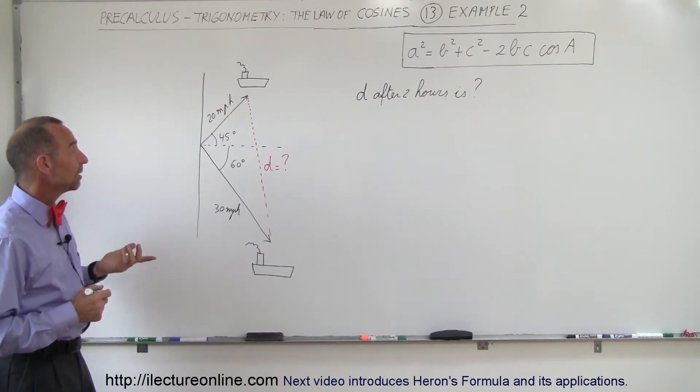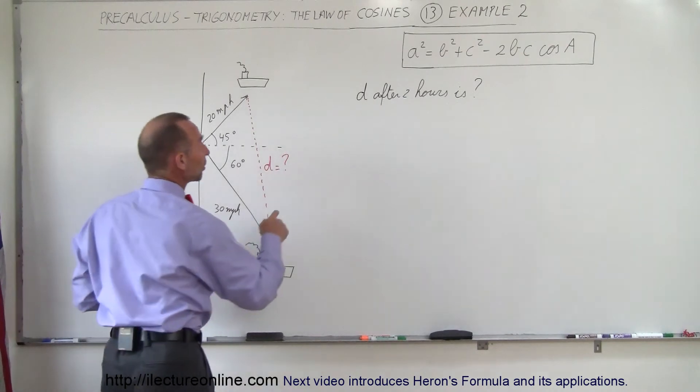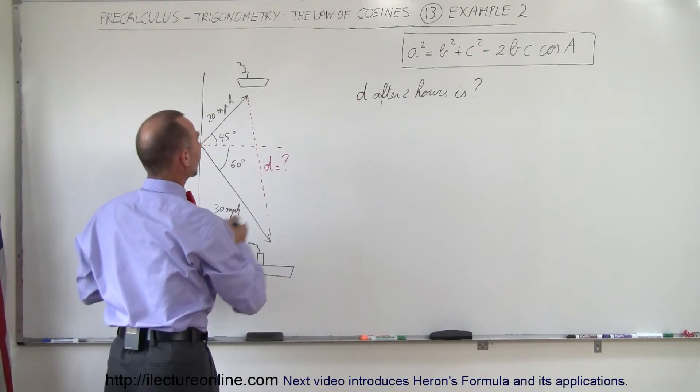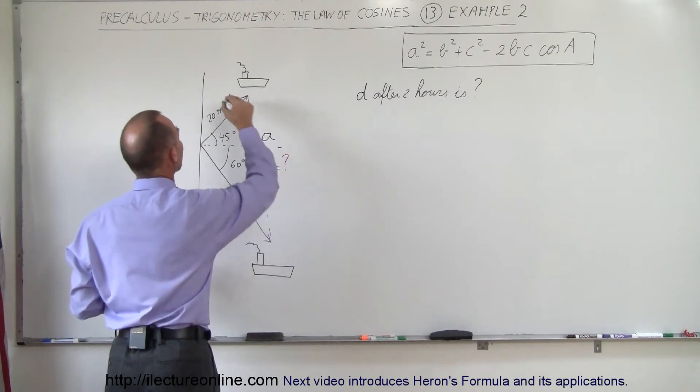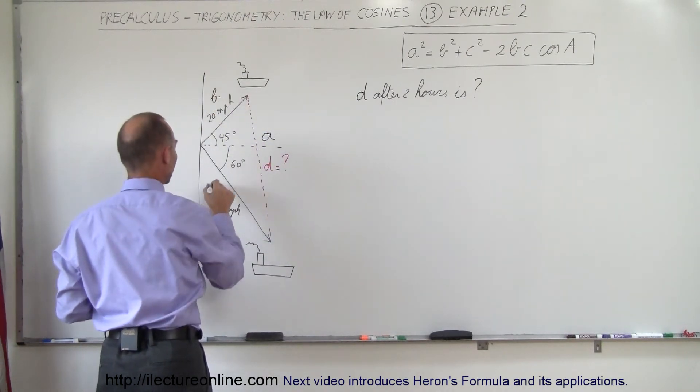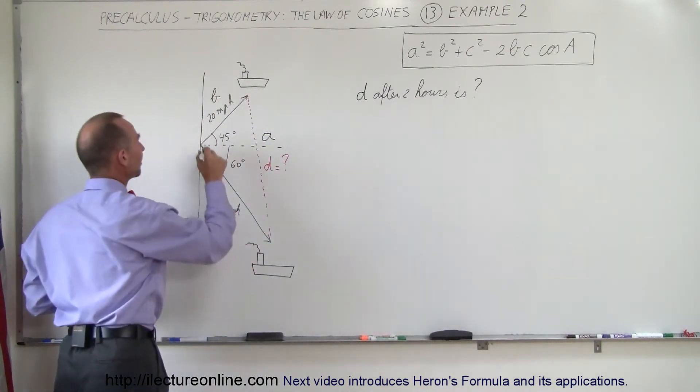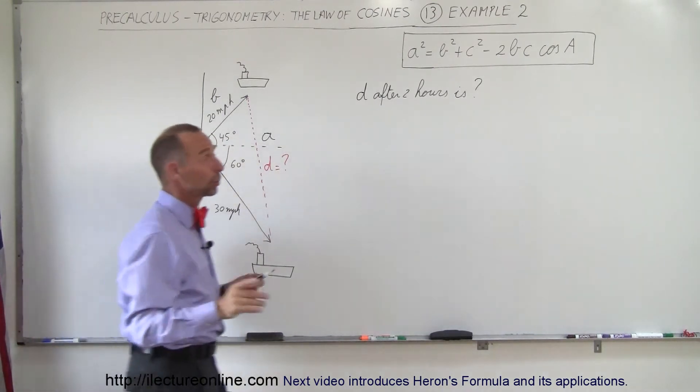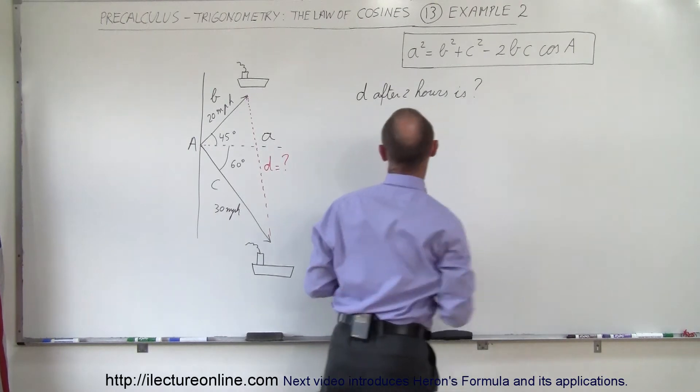So what we need is, of course, we want to label the sides. And since we're looking for this and we have the equation written as a squared equals b squared plus c squared, let's call this side a, let's call this side b, and let's call this side c. That makes this angle right here angle a, and of course in our equation we have angle a, so that works out quite well.